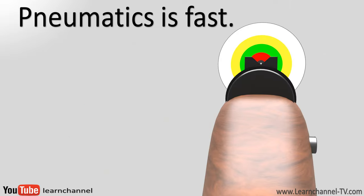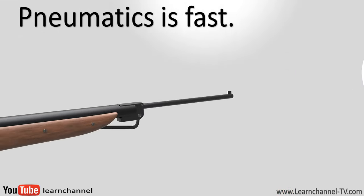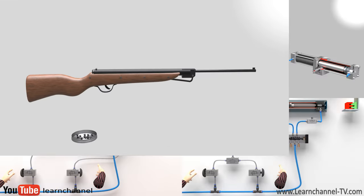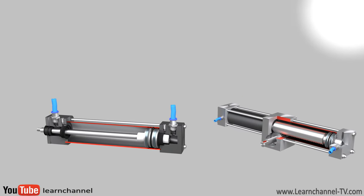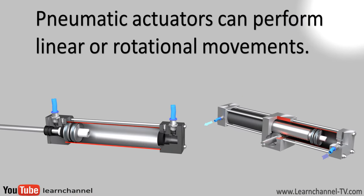Pneumatic actuators can grip, push, and move. They can also perform linear or rotational movements at high speed. That's why pneumatics became one of the most widely used technologies in automation.